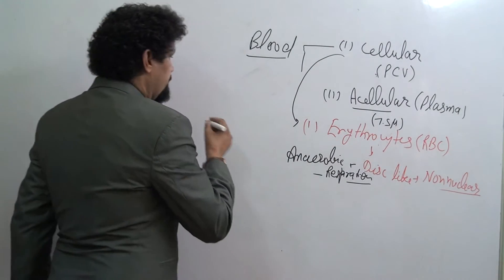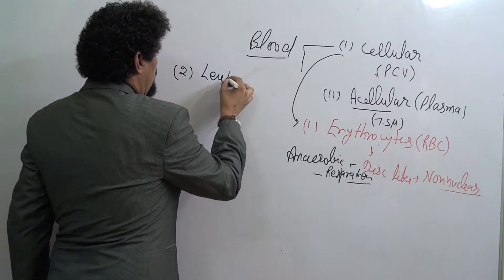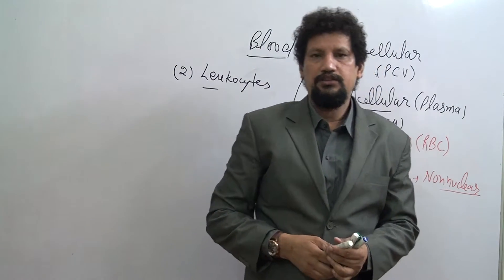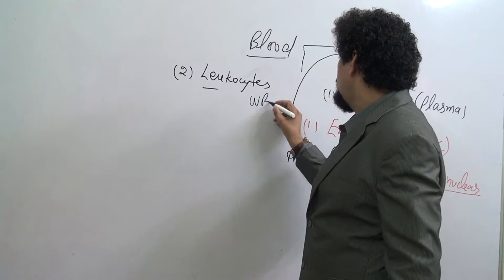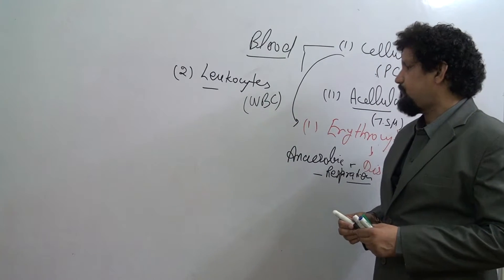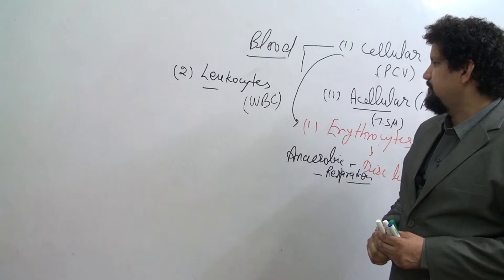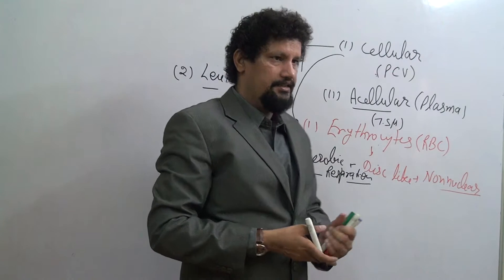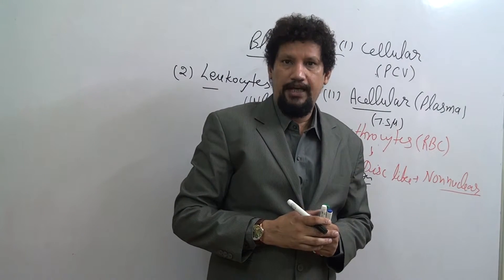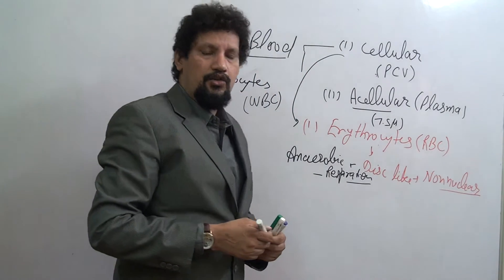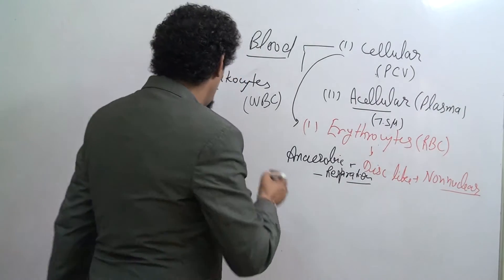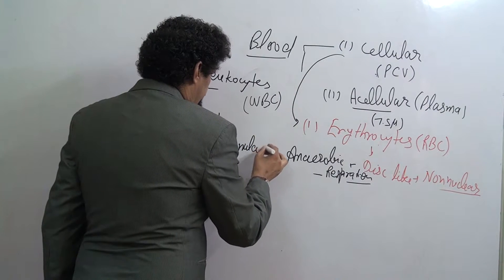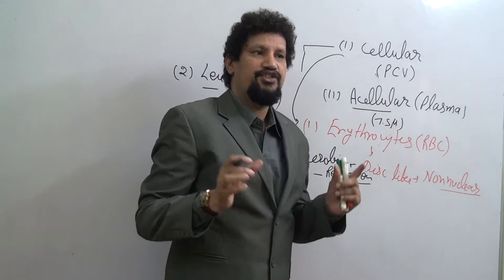The second type of cellular component is the leukocytes, also known as white blood cells. White blood cells are fewer in number but larger in size than red blood cells. Leukocytes are of two types: the granular component and the agranular or non-granular component. The granular leukocytes have three subtypes.